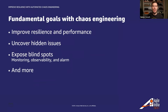Chaos engineering is the process of stressing an application in testing or production environments by creating disruptive events, such as server outages or API throttling. We then observe how the system responds and implement our improvements, to prove or disprove our assumptions about the system's capability to handle these disruptive events. Instead of letting those happen in the middle of the night or during the weekend, we can create them in a controlled environment during working hours.